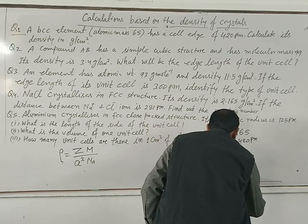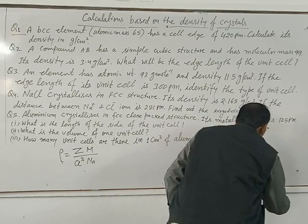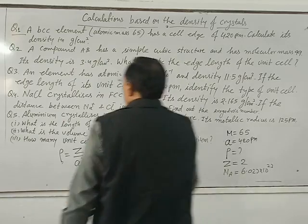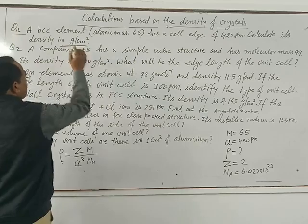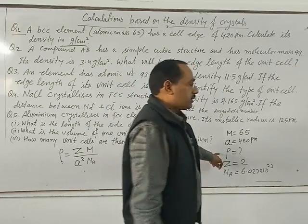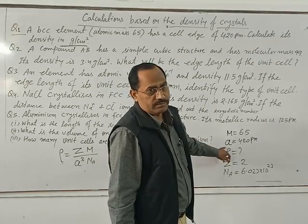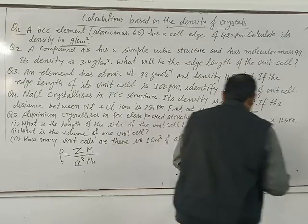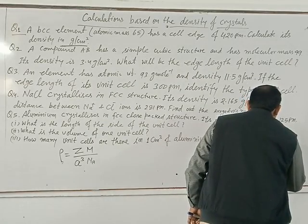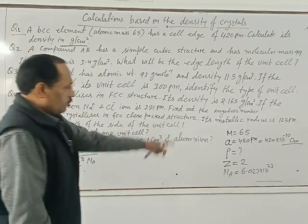Avogadro's number N equals 6.023 times 10 to the power 23. Since density is to be calculated in grams per centimeter cubed, A must be in centimeters. Therefore, 420 picometers equals 420 times 10 to the power minus 10 centimeters.